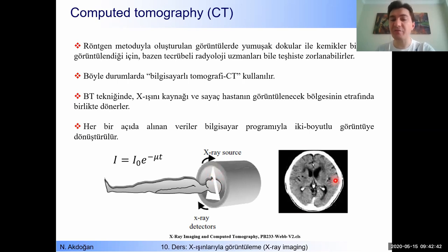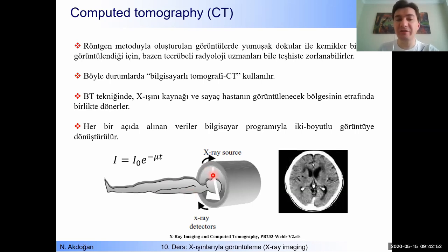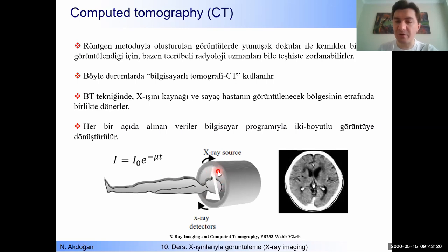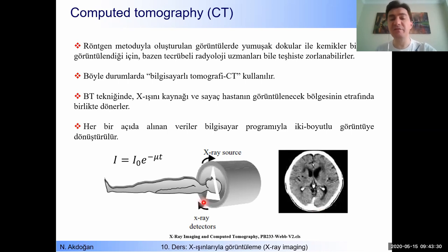The detectors also rotate around the patient with the x-ray source. This allows us to get cross-sectional images of the brain and soft tissues for every part of the patient. You take one picture — one intensity measurement — for the first position, then move the x-ray source and detectors to the second position and take another set of intensities. Using computer programs, those intensities are converted to two-dimensional pictures of soft tissues. This is a very widely used method in hospitals today.